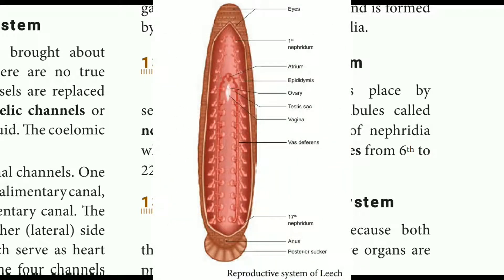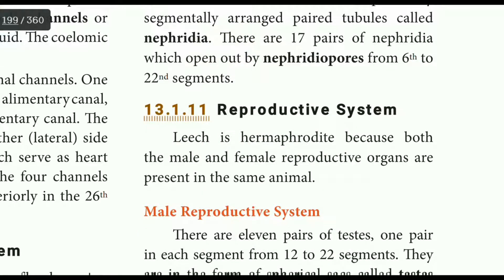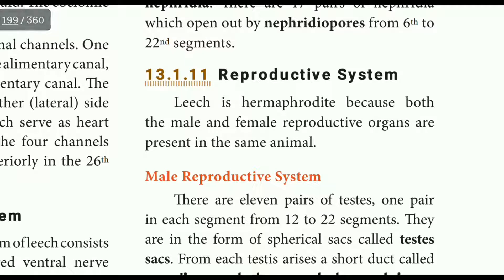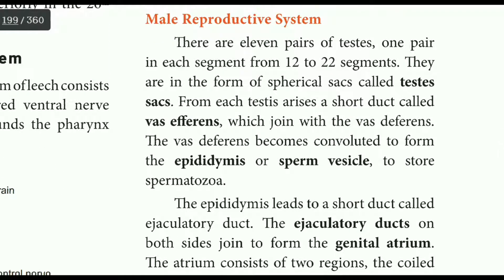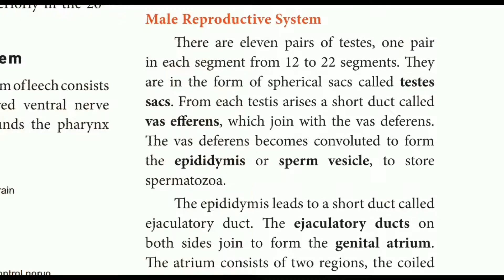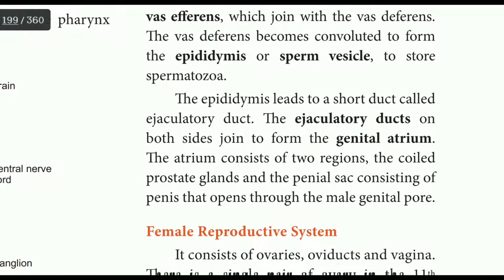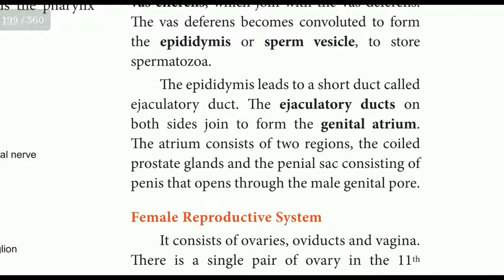Reproductive system: the leech is a hermaphrodite — male and female reproductive organs are in the same animal. The male reproductive system has 11 pairs of testes in segments 12 to 22. Each testis is in a sac with a vas deferens. The vas deferens leads to the seminal vesicle or epididymis, then to 2 ejaculatory ducts, and into the genital atrium, which has a coiled prostate gland and penial sac opening through the male genital pore.